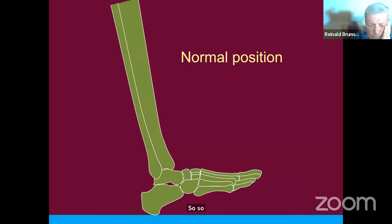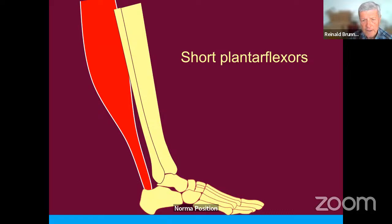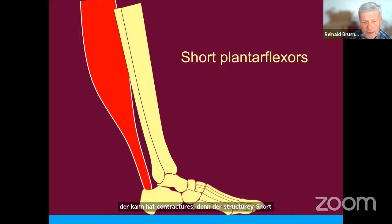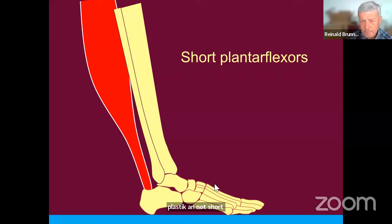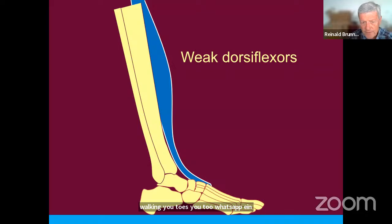You can also have fixed joint contractures, which typically develop over a longer period. Initially the patient can flex or extend normally but does not use that range during function, and over time the tissue adapts—muscles, joint capsule, and ligaments become short. This is a secondary deformity that occurs in muscular patients. Additionally, muscles can be simply overactive without being short or spastic.